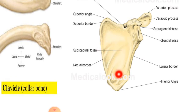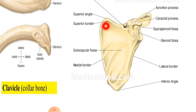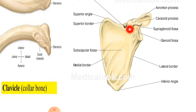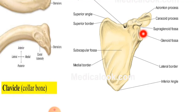This is the subscapular fossa. The superior angle and superior border are just below the superior angle. The acromion process is at its lateral end, and the coracoid process is a beak-like process. This is the glenoid fossa, which basically accommodates the head of the humerus and takes part in the formation of the shoulder joint.